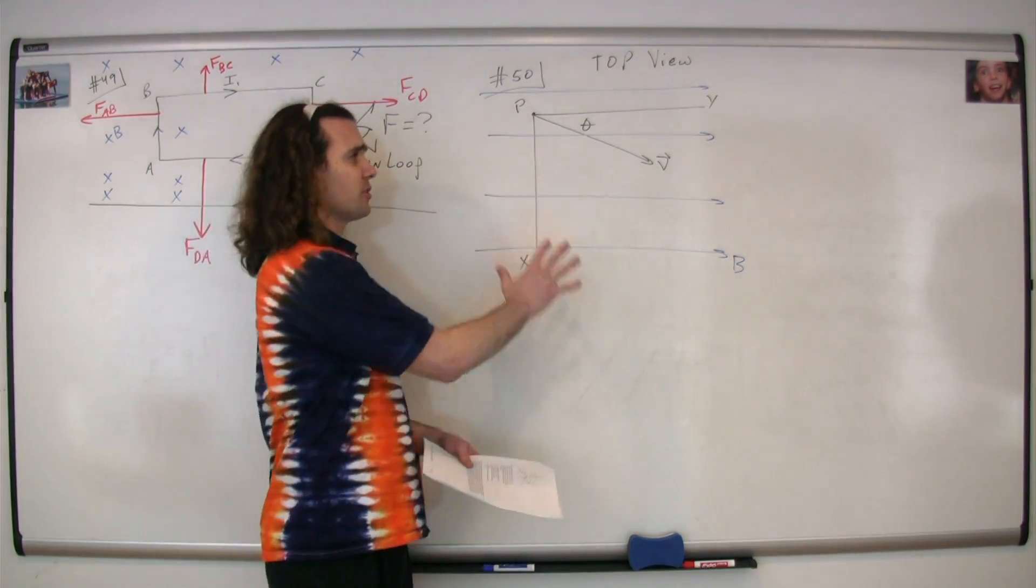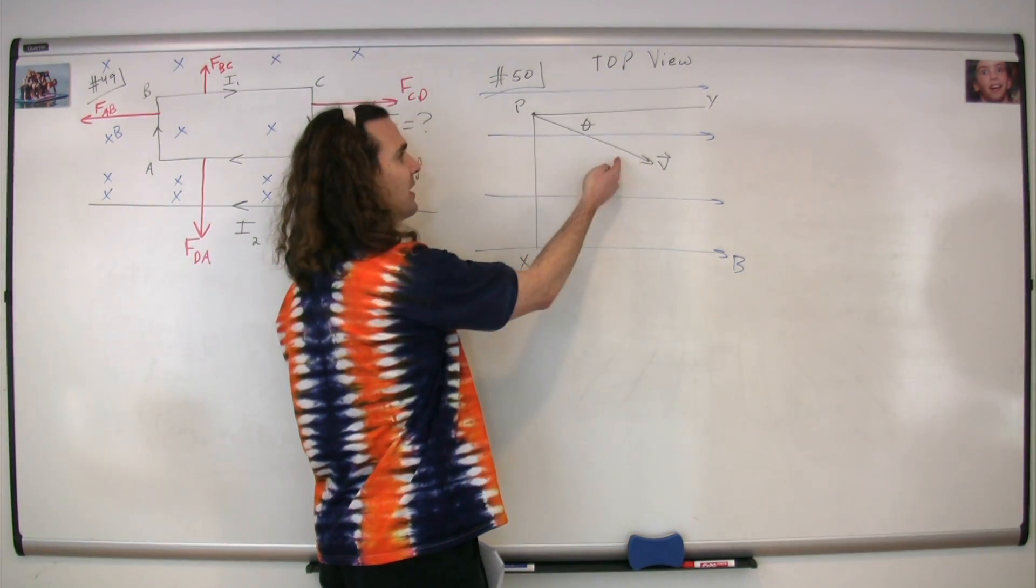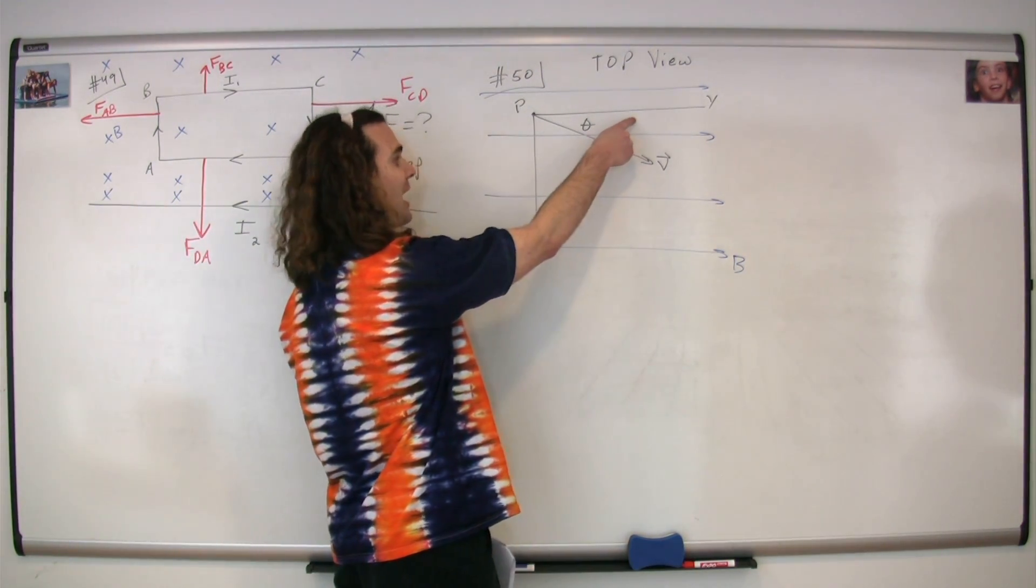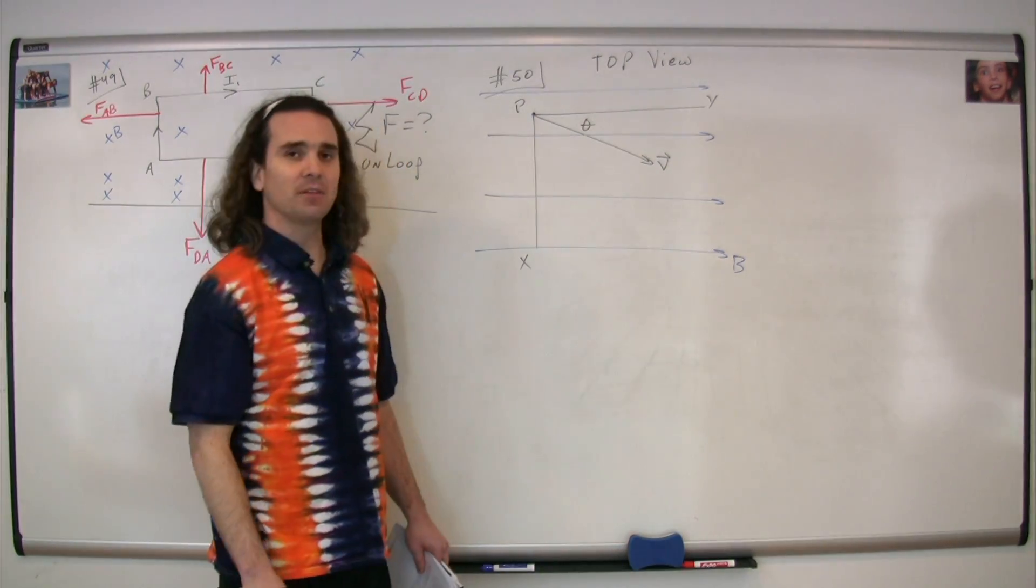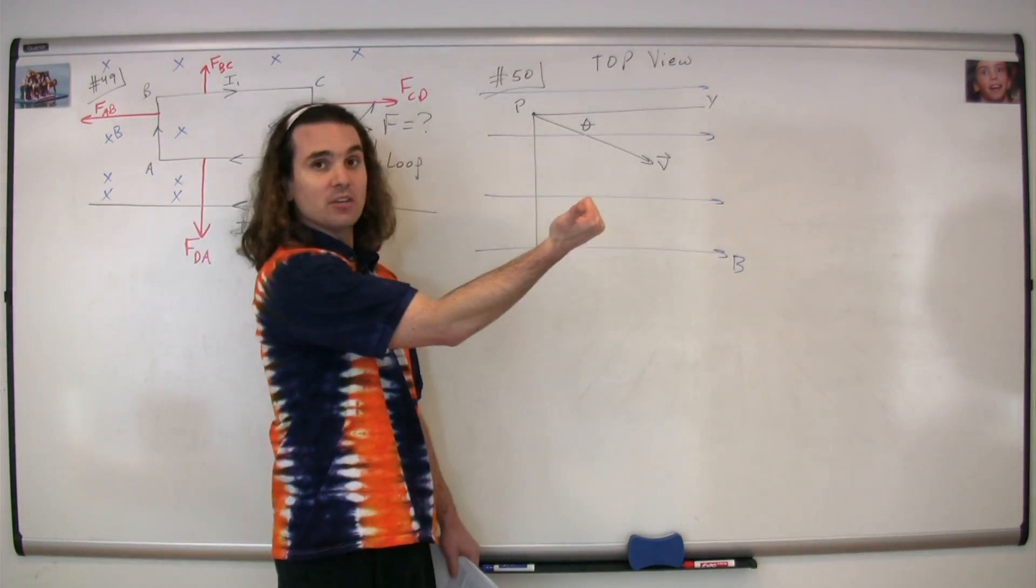Question 50, I've drawn just the top view. We have a proton that is moving at some velocity v at an angle with the y-axis, and we have a magnetic field that is directed directly along that y-axis, and this would be the z direction.